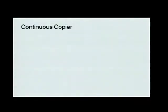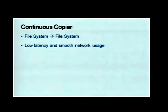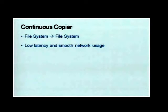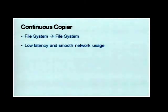The second component of Data Freeway is the continuous copier. The idea is to move data from one file system to another. The major difference from the earlier batch copier is that we have very smooth network usage. A MapReduce job to copy data is not easy to manage because when it starts it consumes a lot of network bandwidth, and when it stops it uses nothing.